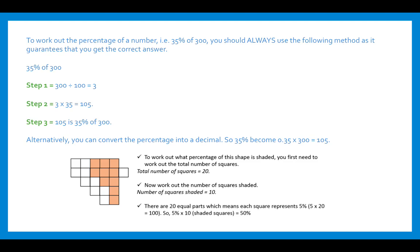To work out what percentage of a shape is shaded, first find the total number of squares — there are 20. Next, work out how many squares are shaded, which is 10. With 20 equal parts, each square represents 5%, because 5 times 20 equals 100. So 5% times 10 shaded squares equals 50%. This is quite easy because 10 is half of 20, so you know half the squares are shaded.